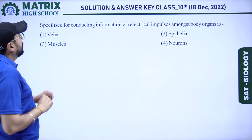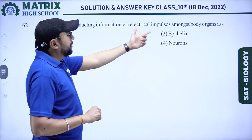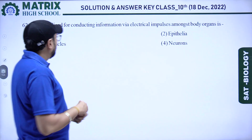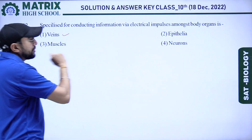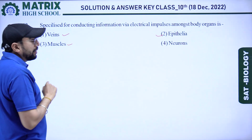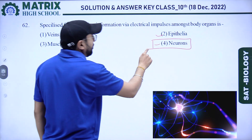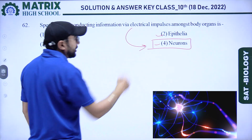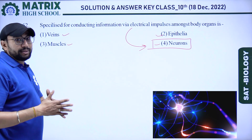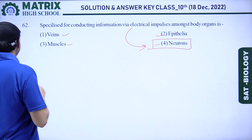Next question: which cell is specialized for conducting information via electrical impulse among body organs? Options: veins, epithelia, muscles, and neuron. Neuron is the right answer because electrical impulses are transferred in the form of ions. So the right answer is neuron.